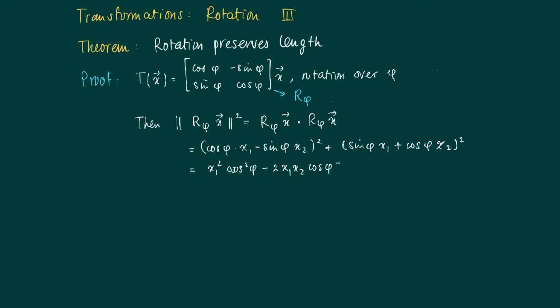We continue by grouping several elements. Here we get cosine squared phi times x1 squared minus 2 times sine phi cosine phi times x1 times x2 plus sine squared phi times x2 squared, plus sine squared phi times x1 squared plus 2 times sine phi cosine phi times x1 times x2 plus cosine squared phi times x2 squared.